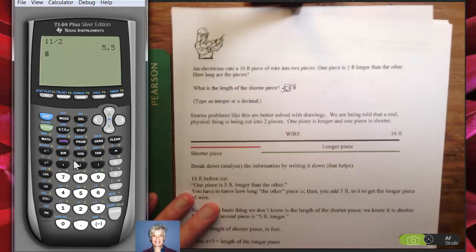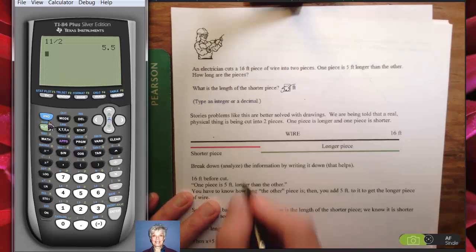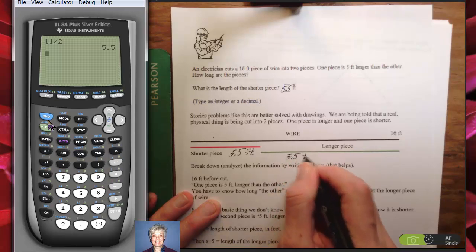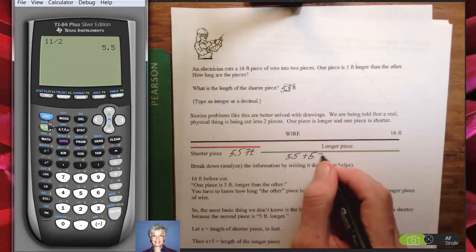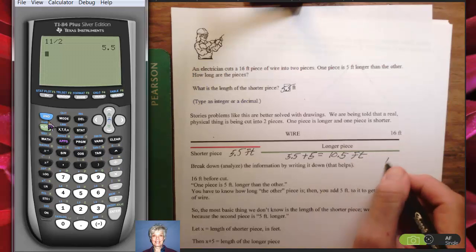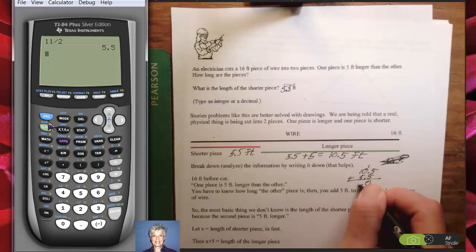So I'll put 5.5 in the answer box. 5.5 feet is the length of the shorter piece and we're not being asked the length of the longer piece. But what if we were asked the length of the longer piece? If this piece is 5.5 feet long, then this piece is going to be 5.5 plus 5 feet long. The other piece is 5 feet longer. 5 plus 5.5 is 10.5. So this piece is going to be 10.5. 10.5 plus 5.5, 5 plus 5 is 10, carry the 1, 1 plus 5 is 6, bring down the 1. Yes, this works. We've got the correct answer.